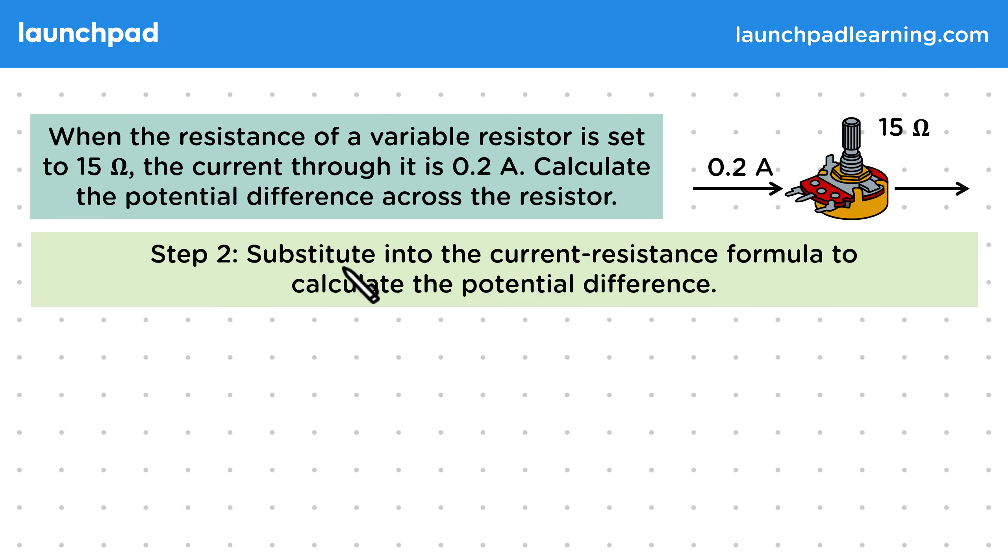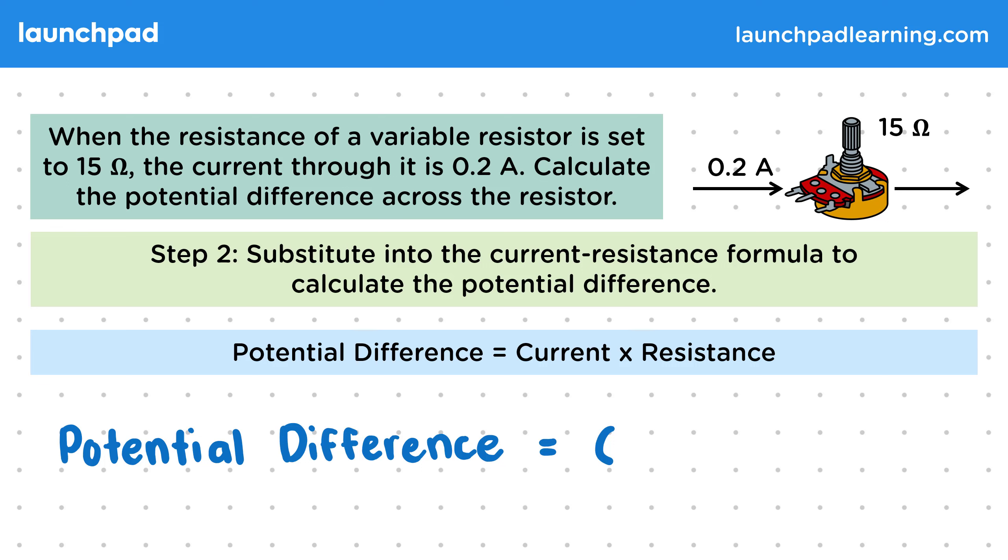The potential difference is equal to 0.2 amps multiplied by 15 ohms, and that gives us 3 volts of potential difference.